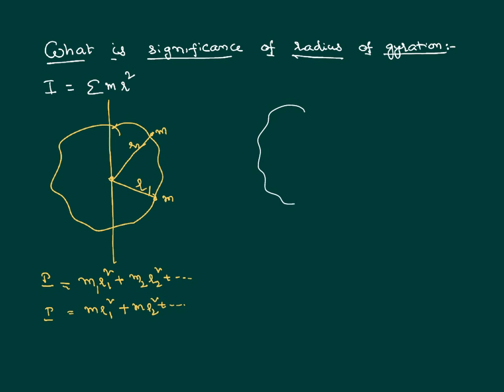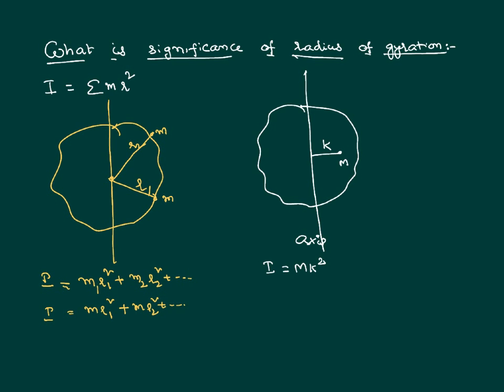Now we want to express moment of inertia in a simpler way. Taking the same body and the same axis of rotation, instead of calculating the mass and distance of each particle, we identify a point where the total mass appears to be concentrated. If that point is at a certain distance from the axis, we call that distance the radius of gyration, and we can write moment of inertia as M·k².